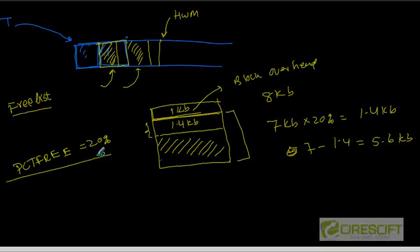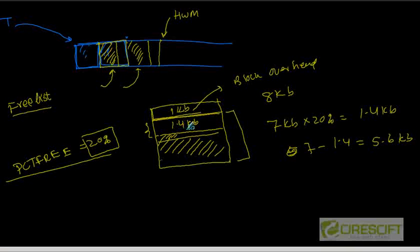So, I hope you understand what is the importance of PCT-free. The remaining 20 percent free space should be reserved for further updates. That means whenever you are going to do an update, you have a row here, that data is stored here, and you want to update. If after the update you need more space, that space is going to be allocated from this 1.4 kilobytes.